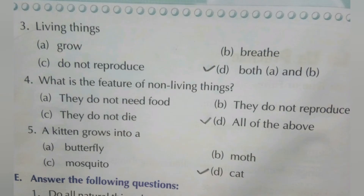Fourth MCQ: what is a feature of non-living things? A: they do not need food — correct. B: they do not reproduce — correct. C: they do not die — correct. D: all of the above are correct. So tick option D.